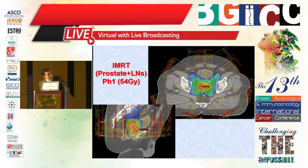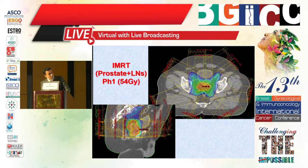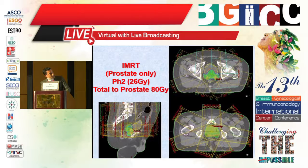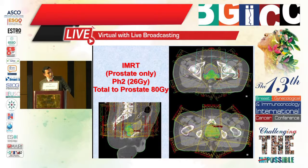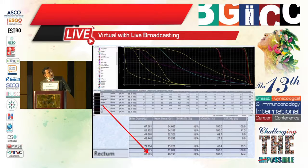Another case — IMRT for prostate plus lymph nodes, phase one: 54 Gy. As you can see, the dose lines conform to the PTV with sparing of organs at risk like the rectum. For the same case, phase two: 26 Gy boost, total dose to prostate 80 Gy. Here we can see the sparing of the rectum, bladder, and femoral heads.